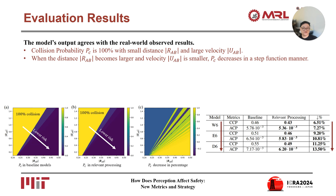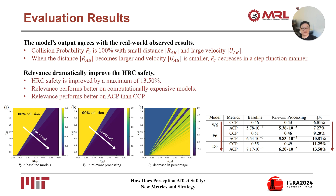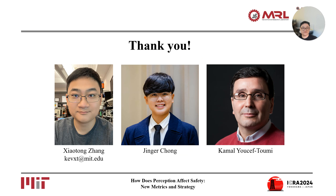This chart shows the results of CCP and ACP for the three models with both baseline and relevance. It is found that relevance dramatically improves the HRC safety. HRC safety is improved by a maximum of 13.5%. Relevance performs better on computationally expensive models and performs better on ACP than CCP. That is all of our presentation. Thank you for listening. Please feel free to let us know if you have any questions.